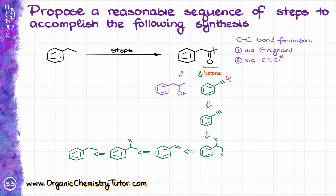Now, when it comes to the purple alcohol, that can be a product of the Grignard reaction, where I would use this aldehyde reacting with methylmagnesium bromide to get the alcohol. This aldehyde can be synthesized either from the alkyne — going back into the green branch — or alternatively from the terminal alcohol, which in turn can be made from the green alkyne. So again, we go into the green branch.